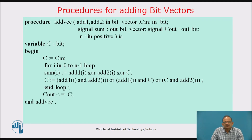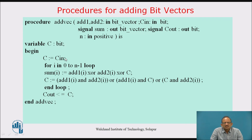Now let us consider an example of a procedure for adding two vectors. Parameters add1 and add2 are in bit vectors — no class is specified, so they are treated as constants. 'cin' is also of type bit and mode 'in'. Then 'signal sum' — sum is of type signal, mode 'out', and type bit vector. Signal 'cout' is of mode 'out' and type bit. One more parameter 'n' is also an input parameter of type positive. Only sum and cout have their class specified as signal — both are output type. A variable 'c' of type bit is declared, and in 'begin', c is assigned to cin — whatever input carry is there, it is given to c.